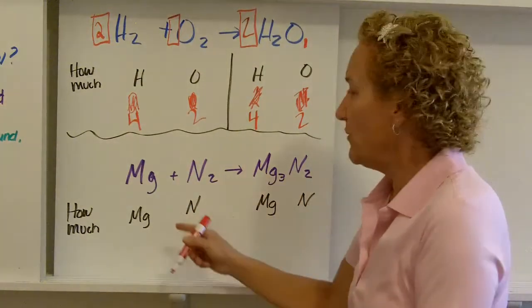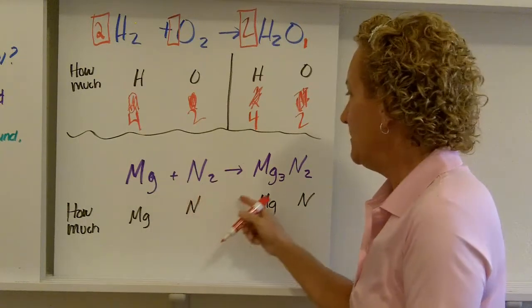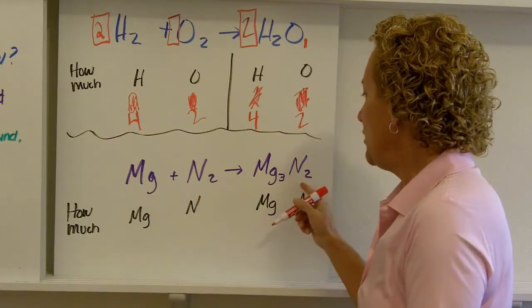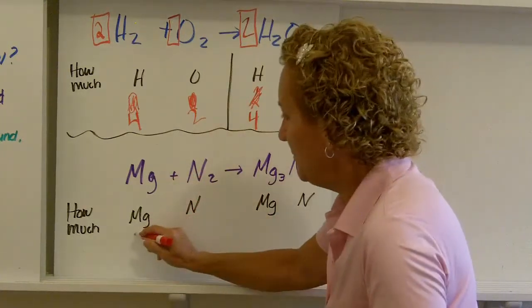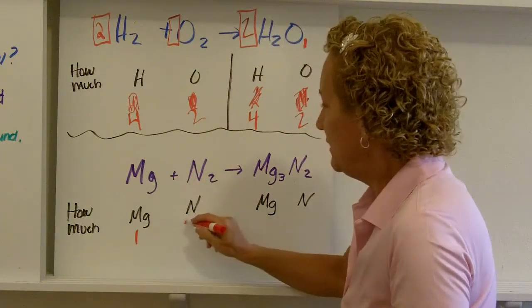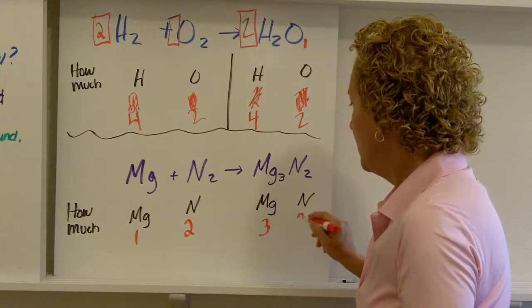Let's do one more example. In this video though, I have Mg, magnesium and nitrogen and that's going to react to form Mg3N2. I'm going to do exactly the same thing I did up here. How much magnesium? One, nitrogen, two, magnesium, three, nitrogen, two.